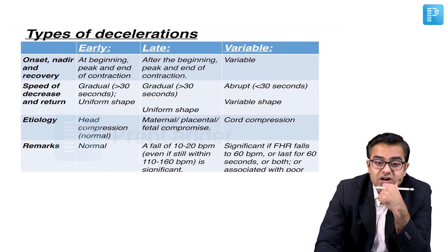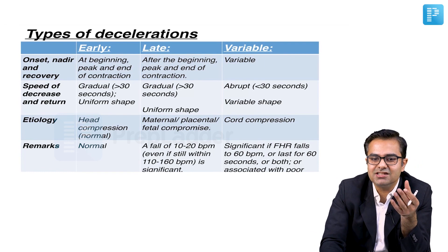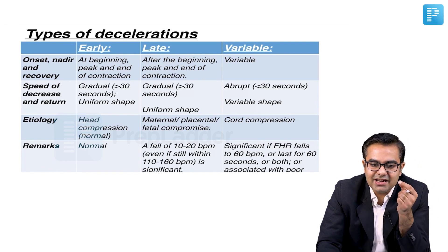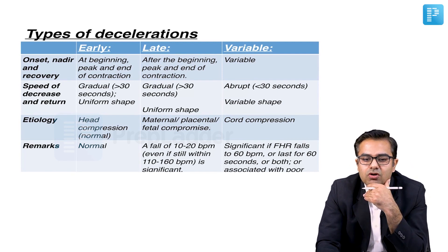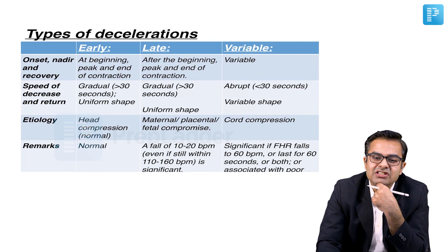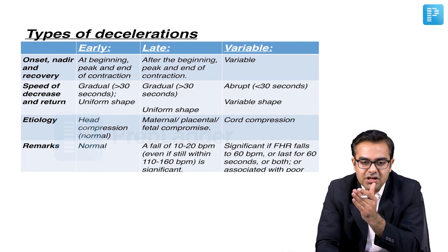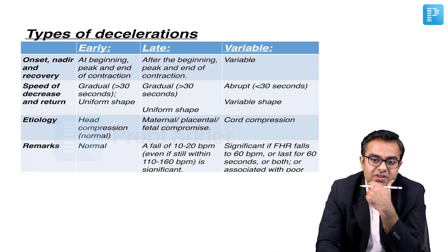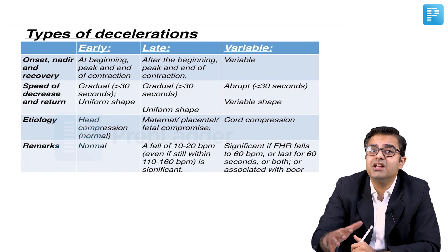Early decelerations are basically because of head compression and these happen during uterine contractions — these are pretty normal. The onset, nadir, and recovery occur at the beginning, peak, and end of the contraction. In late decelerations it is slightly late, so the onset, nadir, and recovery occur a little after the contraction. In variable decelerations it can happen anytime.